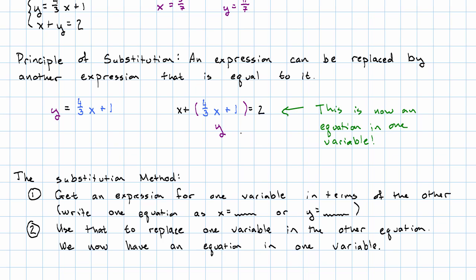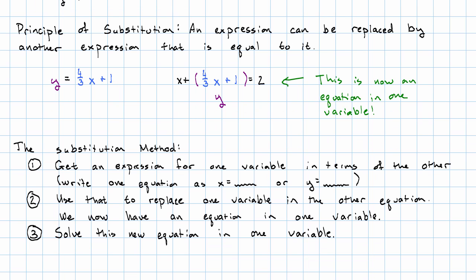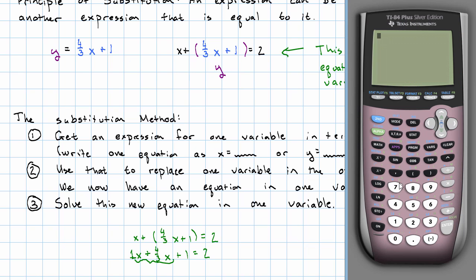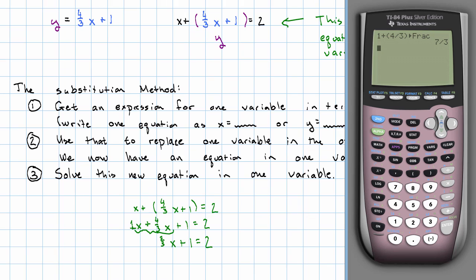What do we do with that equation in one variable? We solve it. In our example, we had x plus four-thirds x plus one equals two. The parentheses aren't doing anything, so we can drop them: x plus four-thirds x plus one equals two. These are like terms, so we can combine them. Notice that x invisibly has a coefficient of one. Adding one plus four-thirds — make it a fraction — we get seven-thirds x plus one equals two.